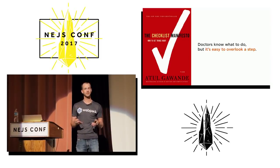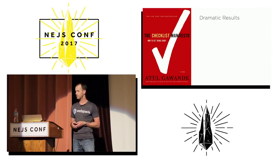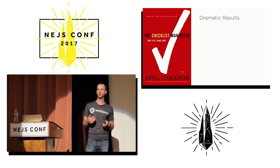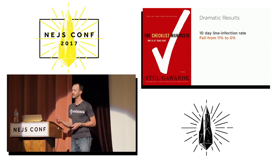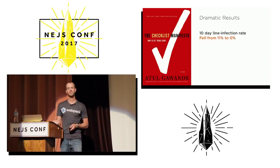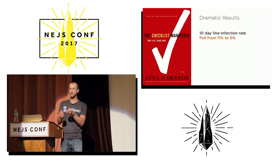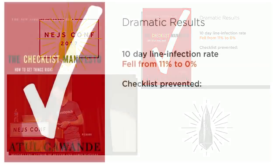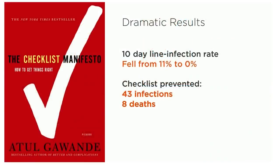They saw dramatic results by creating checklists. The 10-day line infection rate fell from 11% to zero — because how could you miss it if you do the proper steps? The checklist prevented 43 infections, 8 deaths, and two million dollars in costs.